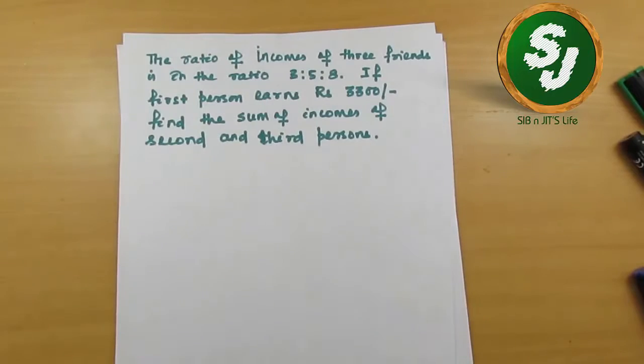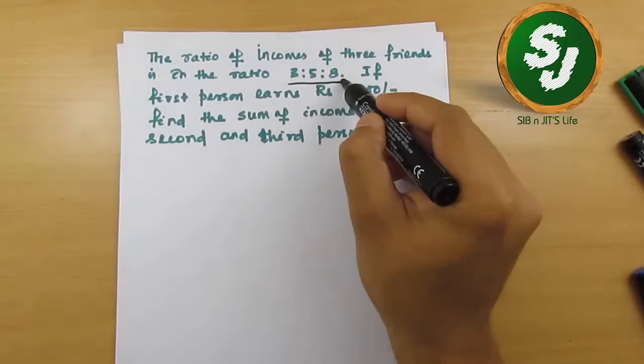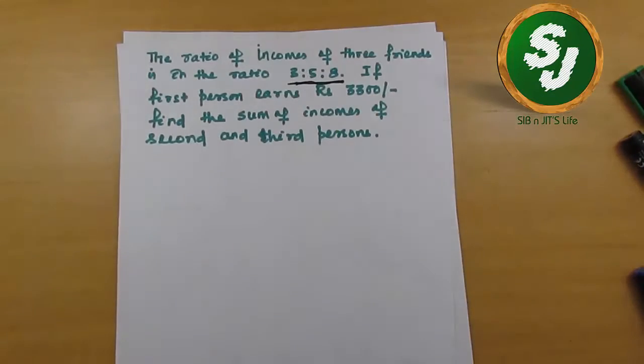Let me read this question for you. The ratio of incomes of three friends is in the ratio 3:5:8. If the first person earns rupees 3300, find the sum of the incomes of second and third persons.